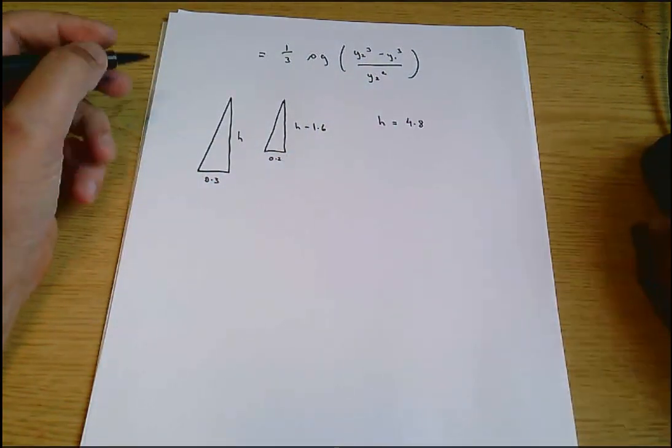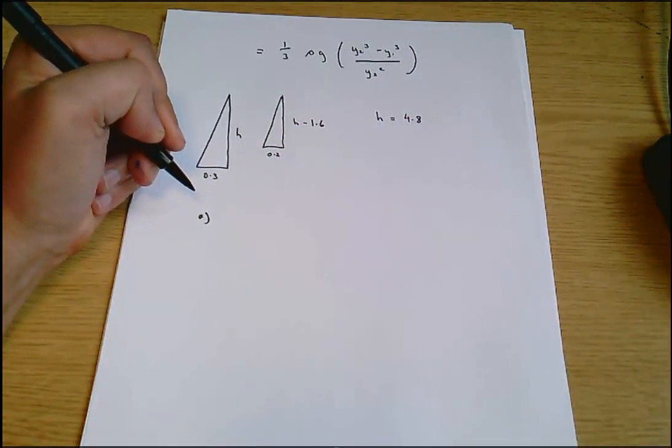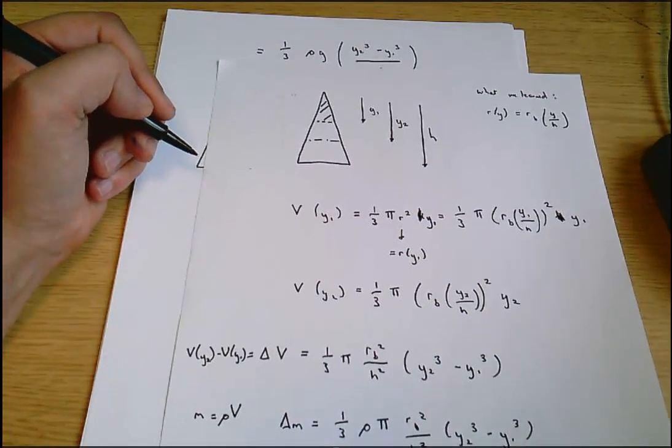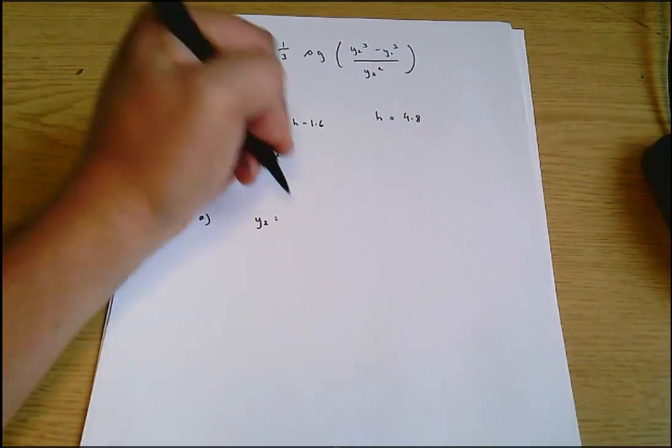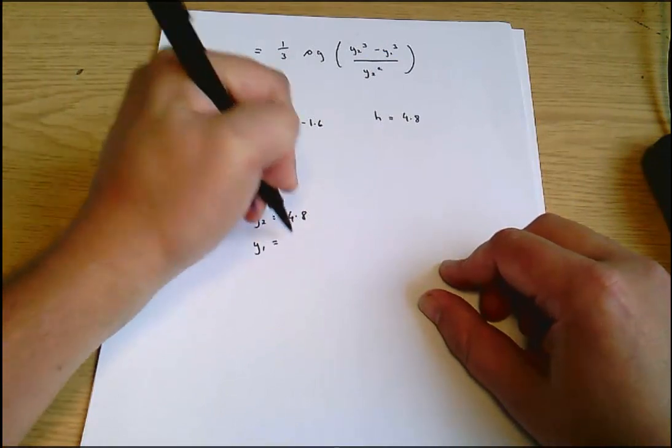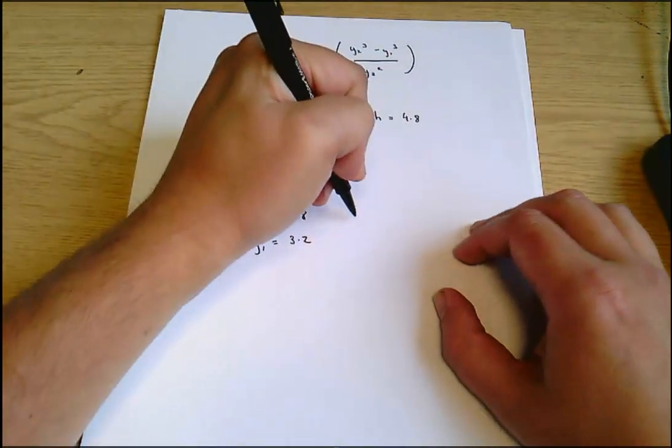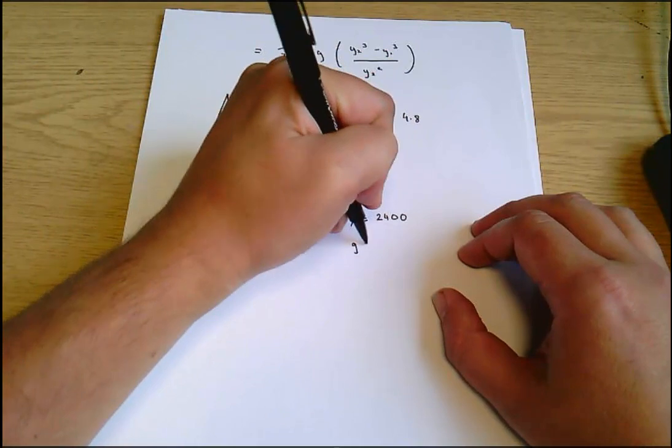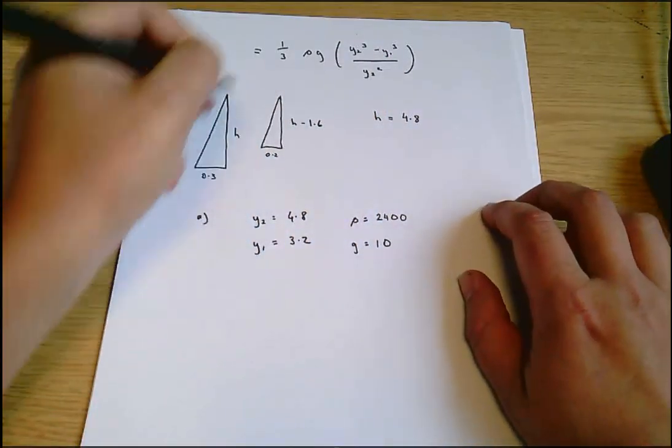So in case, in part A, what we've got in this, we're interested in the stress at the bottom of the pedestal. So Y2 equals 4.8. And in both our cases, Y1, the height at which the pedestal is cut off is going to be 3.2. Rho equals 2,400 in the question. G equals 10. And so we can work out. We've now got everything that goes in here.